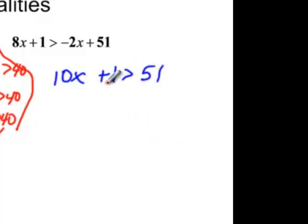Now I have to move the constant. So I subtract the 1 and 10x will be greater than 50. And if I divide by 10 it's a positive 10 so I don't have to change my inequality at all. x is going to be greater than 5.